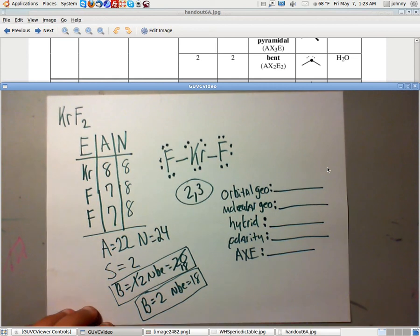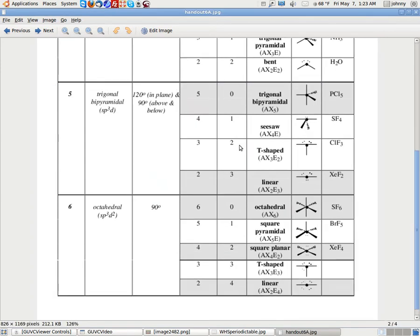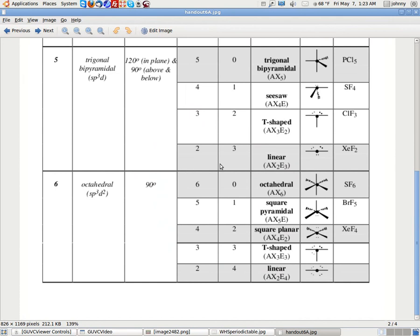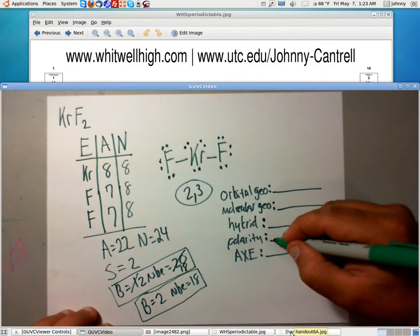Now let's look these up on that sheet on handout 6a. 2, 3. Make sure you know where to find those. I'll put it up here so we can see it better. 2, 3. It's nonpolar. So let's go ahead and write that on there.